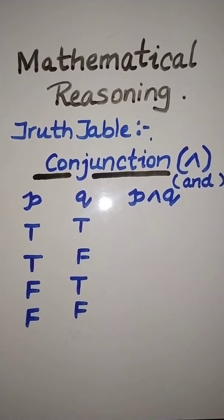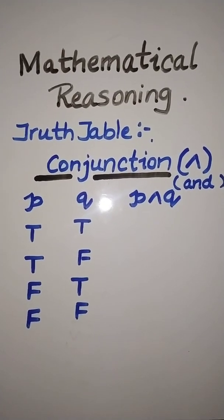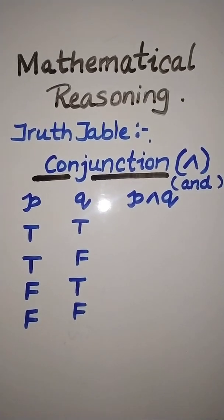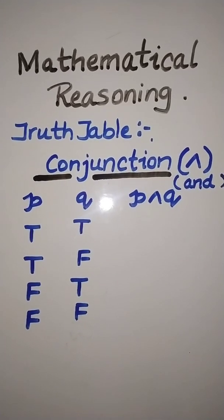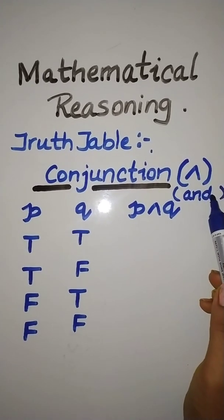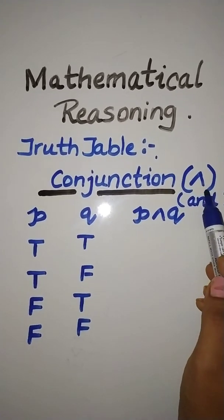Hey viewers, in this video we will see the concept of conjunction. We will see the truth table for the conjunction. The symbol is this and it is also known as AND. This symbol is known as the AND symbol.